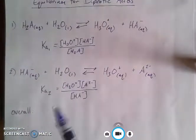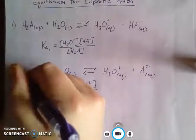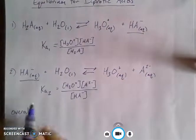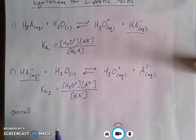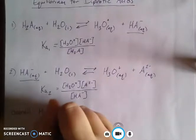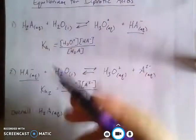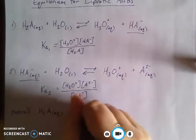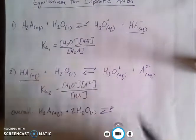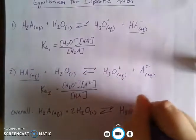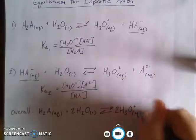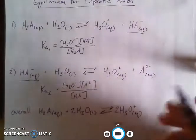In this case, our intermediate here is our HA-, which is formed in step one but used in step two. And so when I combine together these overall reactions, then I have my initial diprotic acid, I have two waters, I have two hydroniums, which makes sense because again it's diprotic so I should end up with two of them, and then the anion that's left over.